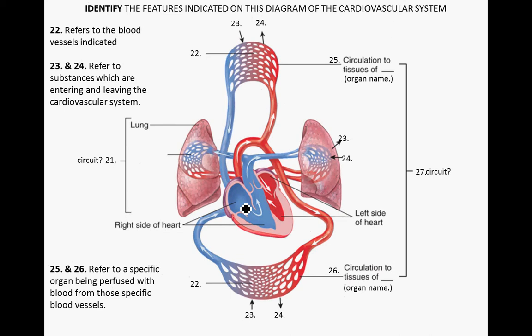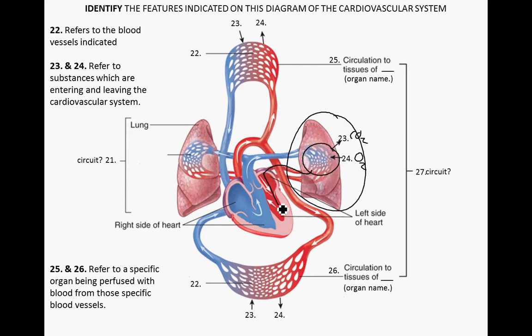Here we have a diagram of the cardiovascular system. At the lungs, carbon dioxide is being dumped off and oxygen is being picked up. When oxygen is picked up at the pulmonary capillary bed, that oxygenated blood is returned to the left side of the heart and then delivered to the tissues of the body. At the systemic capillary bed, the blood is dumping off oxygen to exercising muscles to do aerobic respiration and make ATP.